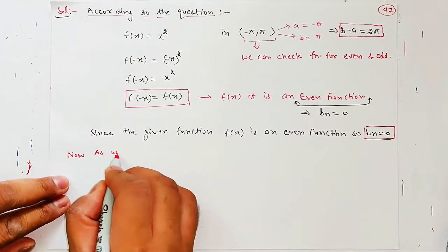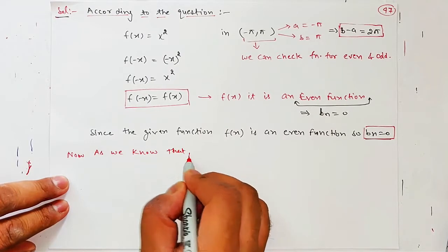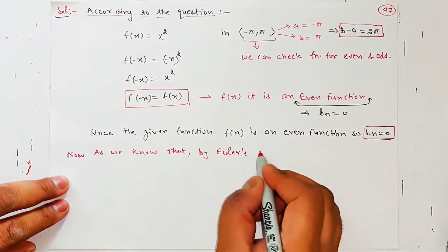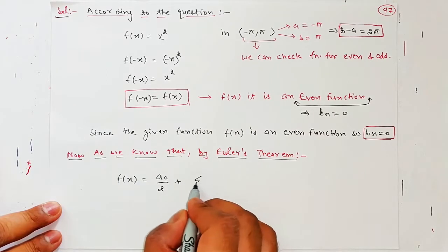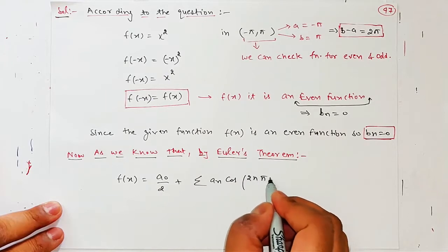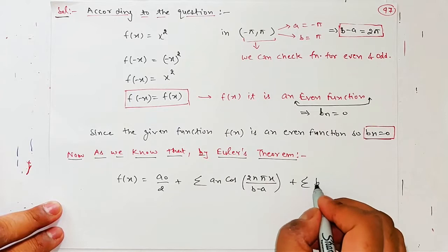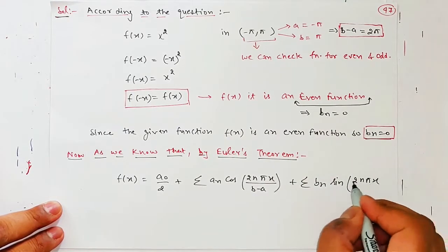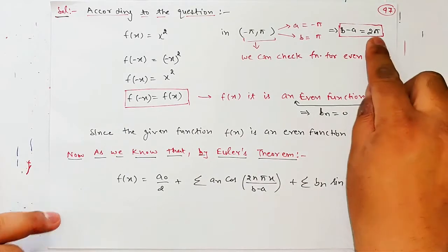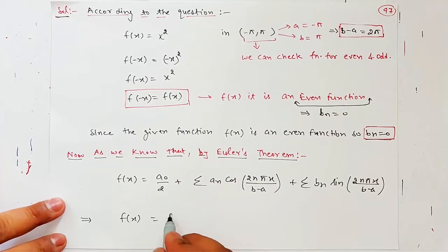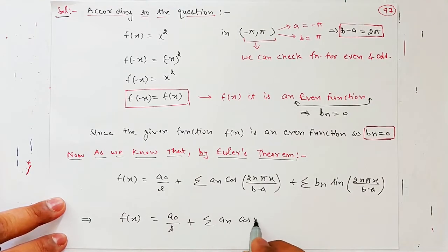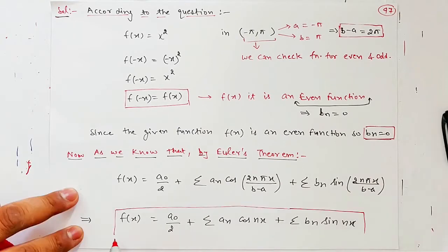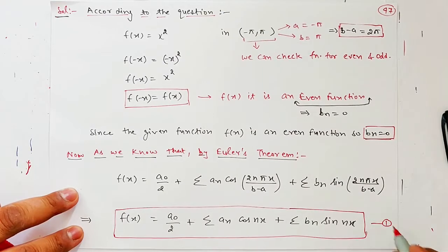Now as we know that by Euler's theorem — Euler's theorem ka formula kya hota hai: f(x) = a₀/2 plus summation aₙ cos(2nπx / (b−a)) plus summation bₙ sin(2nπx / (b−a)). Aapko pata hai b minus a ki mein yahan 2π hai. Toh mere paas f(x) ka formula kya bana: a₀/2 plus summation aₙ cos(nx) — kyunki 2π put karo toh 2 aur π kat jaayenge — plus summation bₙ sin(nx). Main isko equation number 1 maan leta hoon.